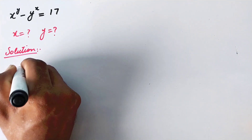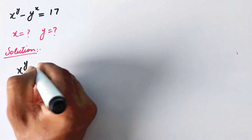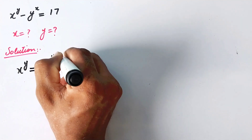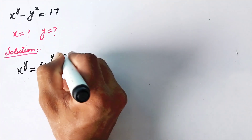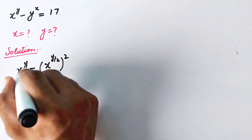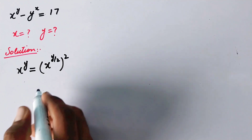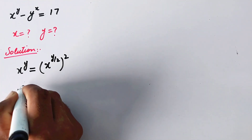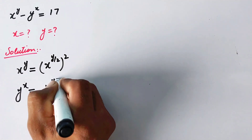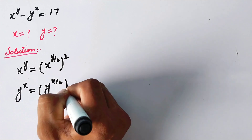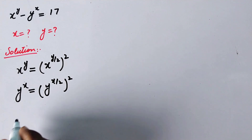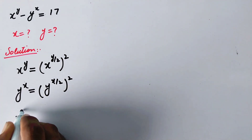First of all, we will write x^y as (x^(y/2))² — the 2 divides out and it remains x^y. Similarly, y^x can be written as (y^(x/2))².